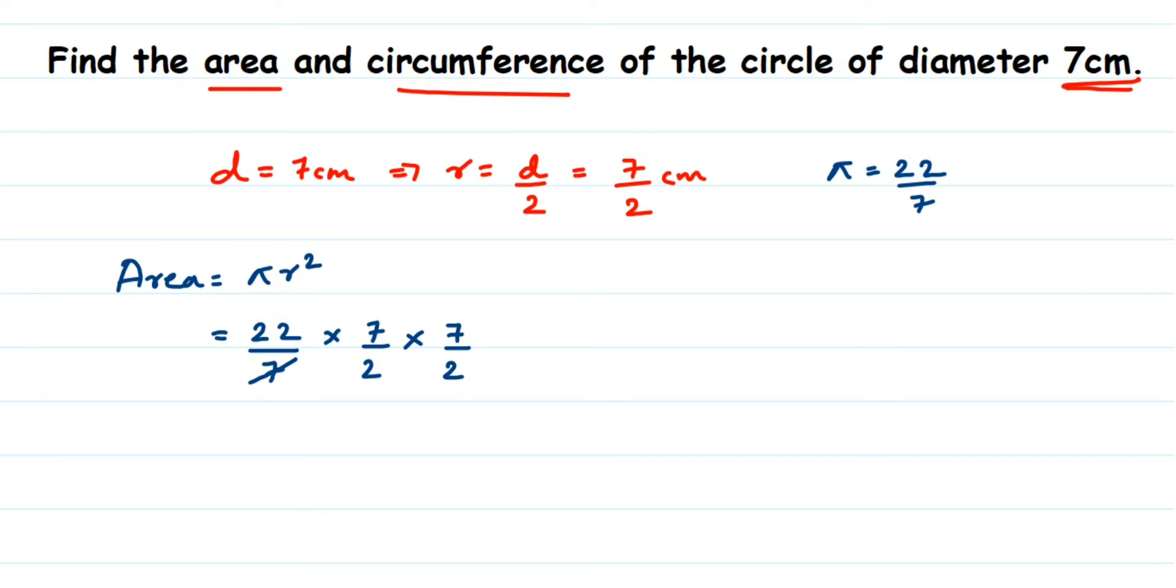You can cancel 2 and 22 - two ones are two, two elevens are... So multiply the numbers in the numerator: 11 and 7, so 11 sevens are 77. In the denominator we have 1 and 2, so 77/2 cm². Or if you want to convert this into decimal, you will get 38.5 cm².